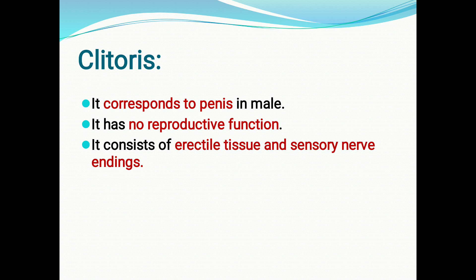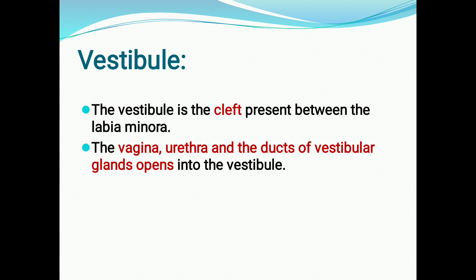The clitoris corresponds to the penis in males. It has no particular reproductive function but helps in sexual stimulation. It is made of erectile tissue and sensory nerve endings, and these sensory nerve endings present in the clitoris help in sexual stimulation.